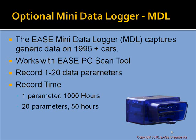Related to record and playback is the optional Mini Data Logger, or MDL. The Ease Mini Data Logger captures generic data on all 1996 and newer OBD2 compliant vehicles, working in conjunction with the PC Scan Tool. Simply configure which parameters you want to record, plug it in the vehicle, drive around, bring it back, upload the data, and analyze it with the Ease PC Scan Tool software. You can record 1 to 20 parameters — recording one parameter allows up to 1,000 hours; at 20 parameters, it records 50 hours of drive time.